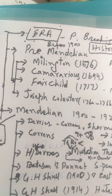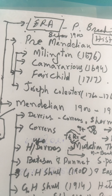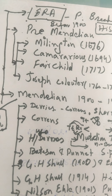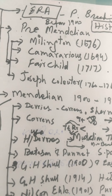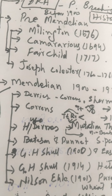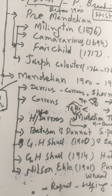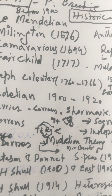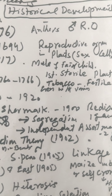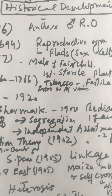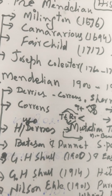The breeders and scientists who participated in plant breeding during the Pre-Mendelian Era are Millington, Camerarius, Fairchild, and Joseph Koelreuter. Millington, in 1676, identified the male reproductive organ in plants and called it the anther. Next is Camerarius, also referenced alongside Fairchild in 1717.